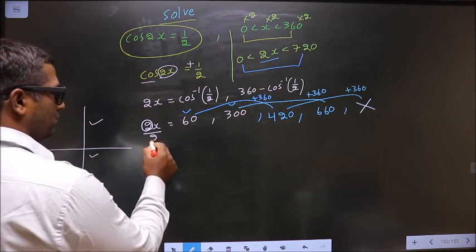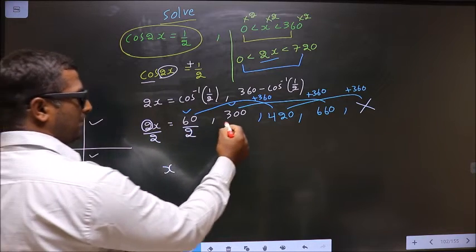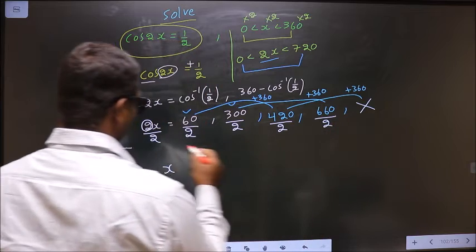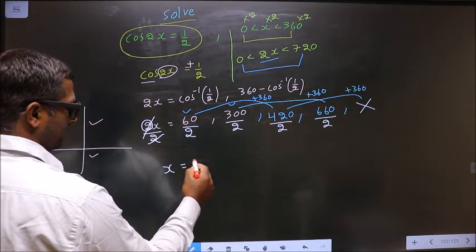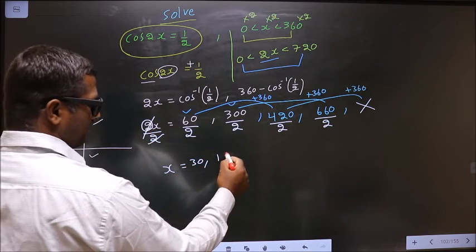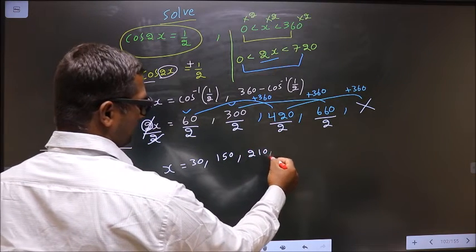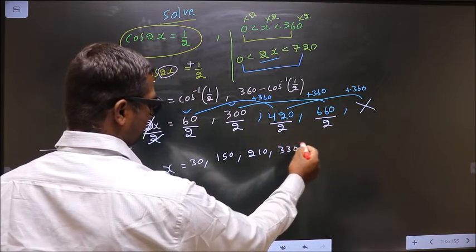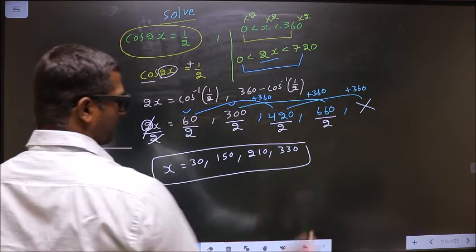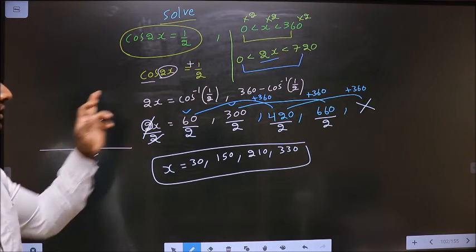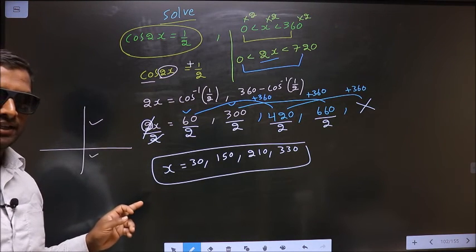Now to get the values for x we have to remove this 2, so divide by 2. We get 30, 150, 210, and 330. These are the values for x.